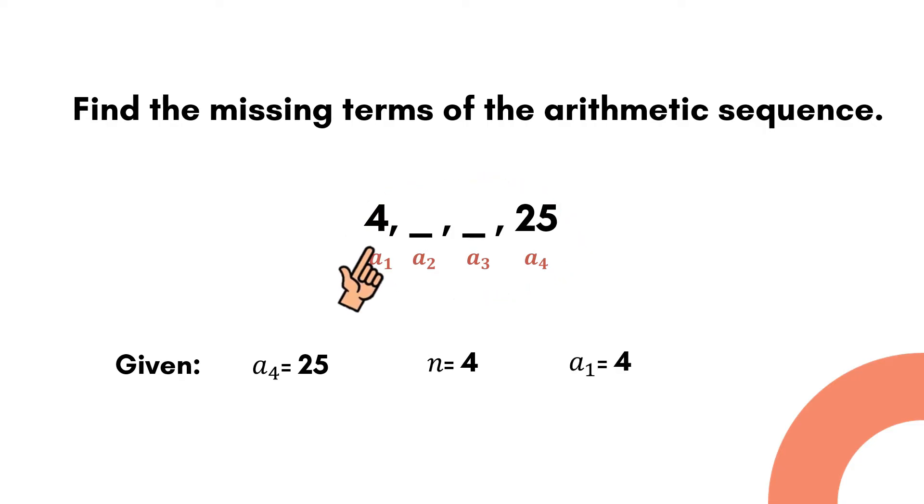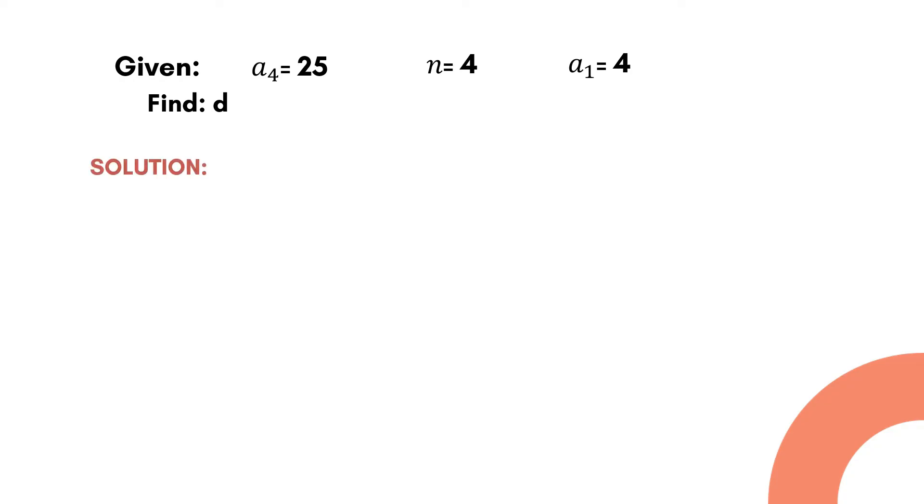Then we have to find d for us to know the constant difference that should be added to the first term to get the second and the third term. Let us now solve for the common difference.